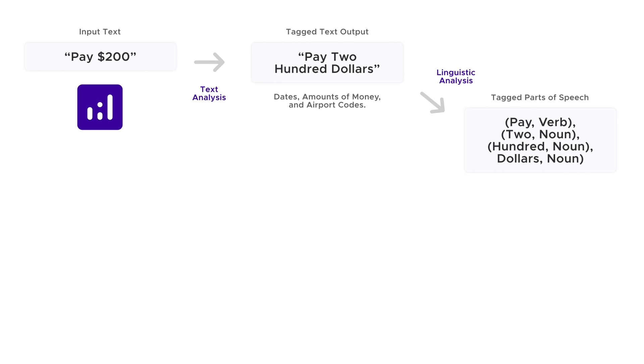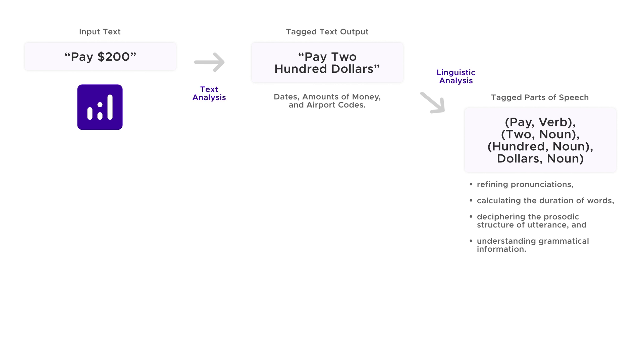The output from text analysis is passed into linguistic analysis for refining pronunciations, calculating the duration of words, deciphering the prosodic structure of utterances, and understanding grammatical information.